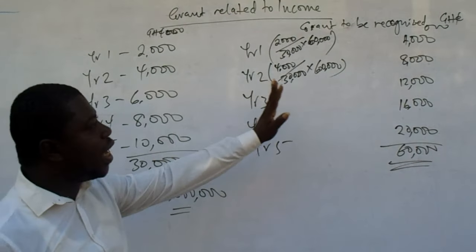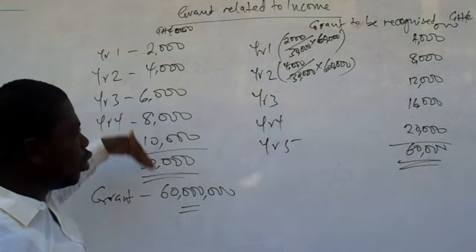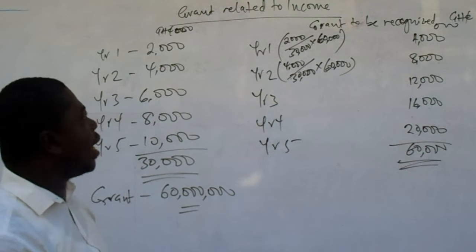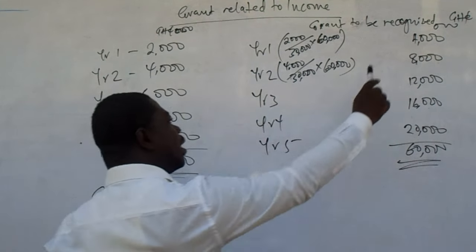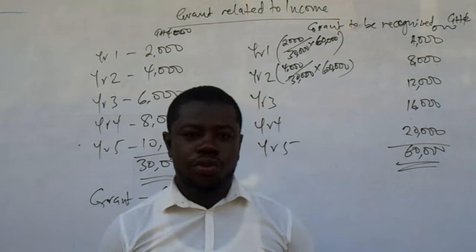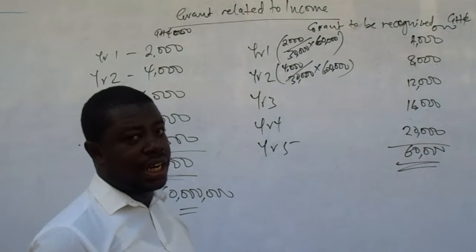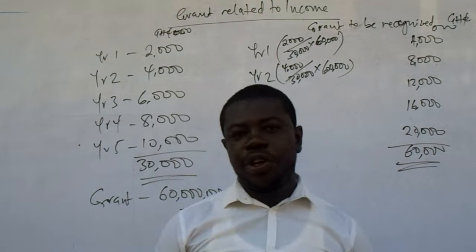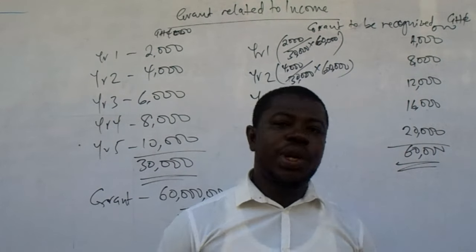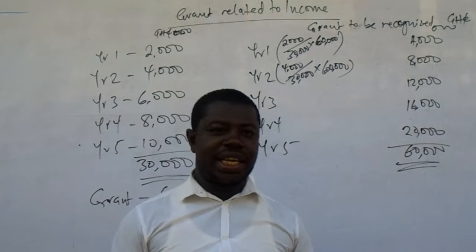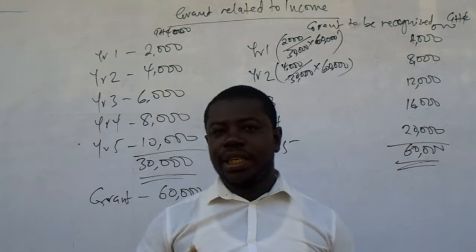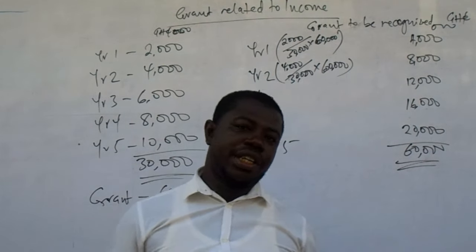We have allocated the grants over the useful life of the project and recognised it in the manner of the way costs are incurred. Each year the cost is treated as an expense and the grant portion is treated as income to offset it, just like we did with the previous method. It is possible that the grant may be lesser than the total cost incurred — we apply the same method; the grant will just be less than the cost being offset each year.